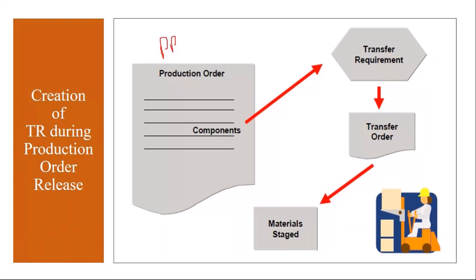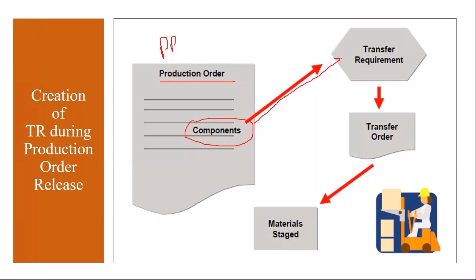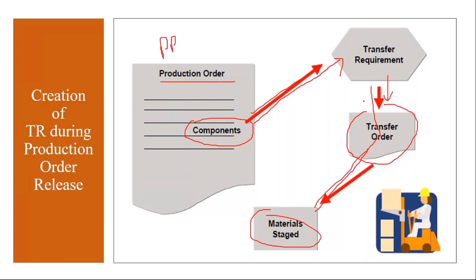From the PP side, we create and release the order. When we release the order, for the components there will be a transfer requirement generation. This is the basic integration. After that the WM team will take over — they will convert this TR to a transfer order, and based on that the material staging will happen. In this session we will be covering only generating the TR from production.